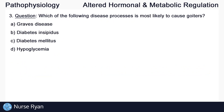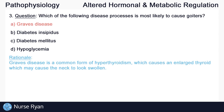Question number three: which of the following disease processes is most likely to cause goiters? This one is A, Graves disease. Graves disease is a common form of hyperthyroidism, which causes an enlarged thyroid, which may cause the neck to look swollen, also known as a goiter.